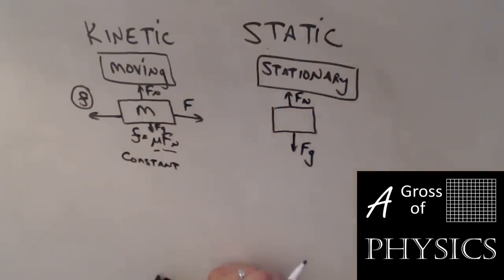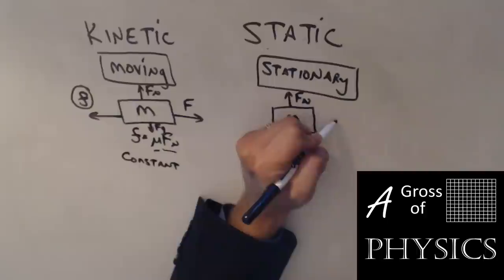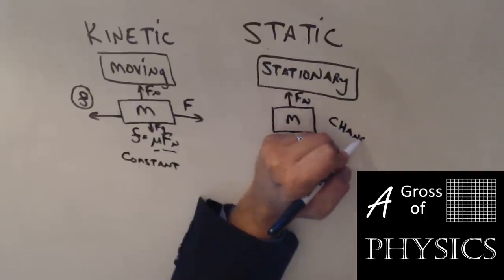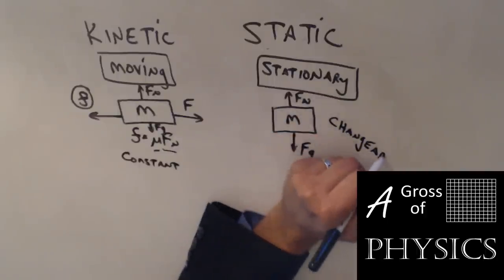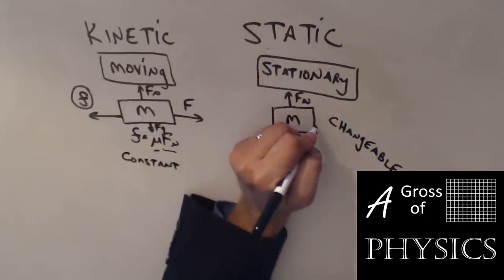Now, static friction has to be more flexible, because it's still based on the normal force. It's still based on a mu, but they're slightly different. But here's why it needs to be a little more sneaky, if you will, in terms of its value. It does not have a constant value, it's changeable.